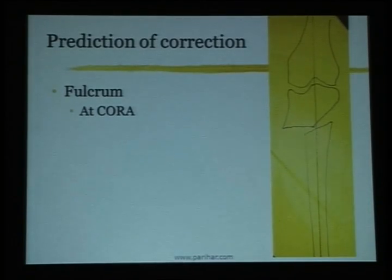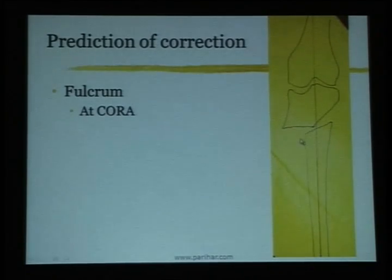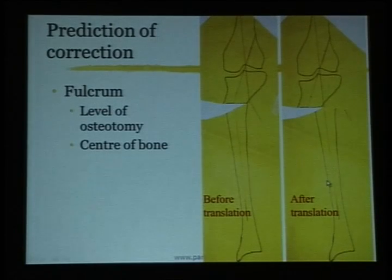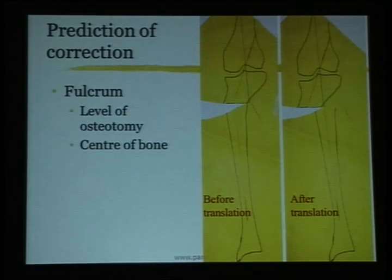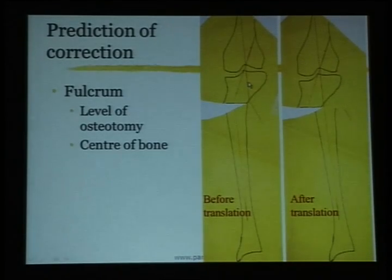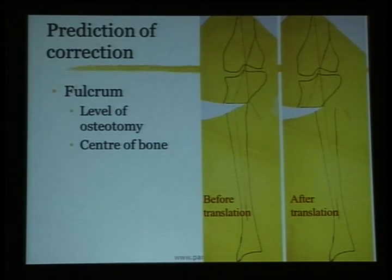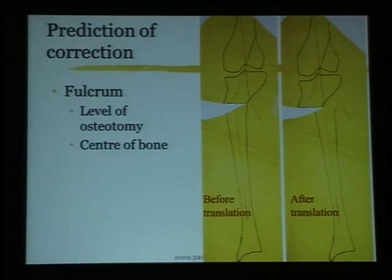Those familiar with deformity correction rules know that normally the osteotomy should be at the level of the CORA, and when it is not, you will have a certain amount of translation. If you do this with that in mind, you get correction of the axis, but there appears to be a translation at the osteotomy that looks unacceptable — yet the axis is perfectly normalized. If you just do an opening or closing wedge without translation, you see the axes are displaced away from each other and you are not restoring the axis.